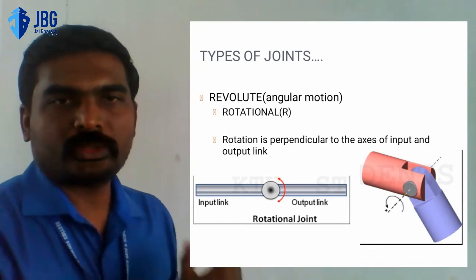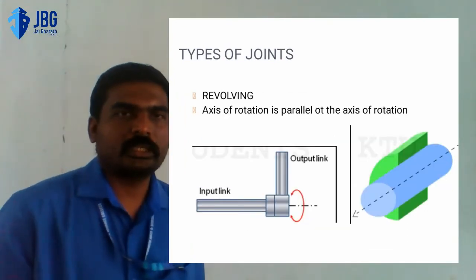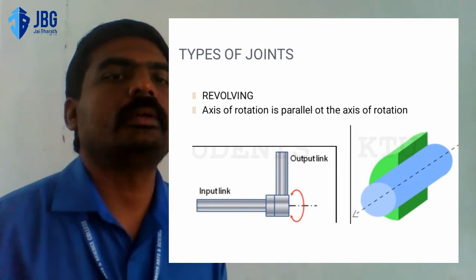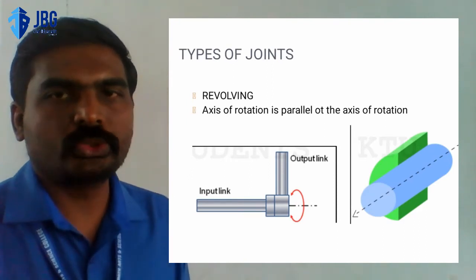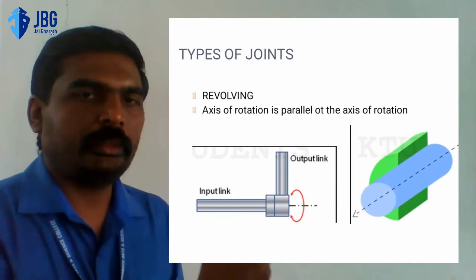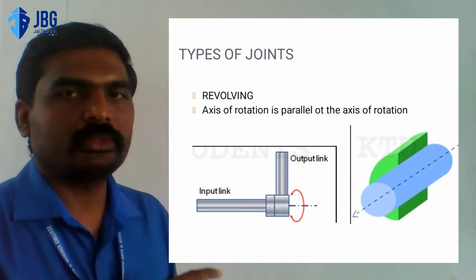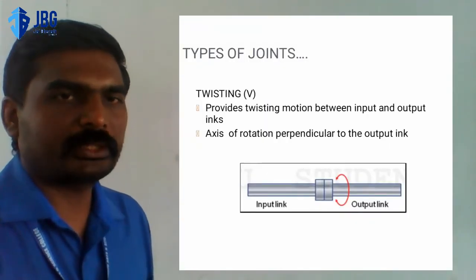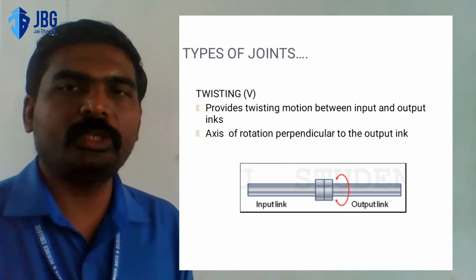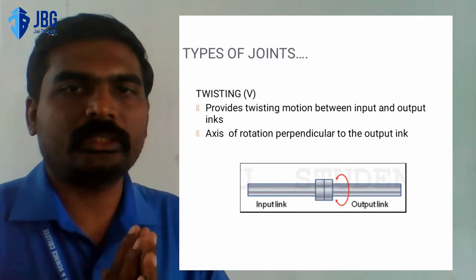A three-dimensional figure is also available. The second type is the revolving type — angular motion where the axis of rotation is parallel to the axis of the input link. The input link and output link rotate around the axis of the input link, which is parallel to the axis of rotation. The next one is the twisting type, represented as V, which provides twisting motion between input and output links. The axis of rotation is perpendicular to the output link. You can see the diagram of a twisting joint.